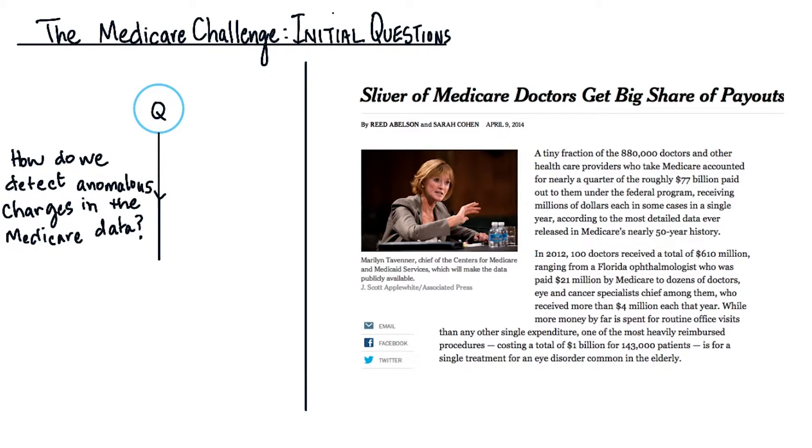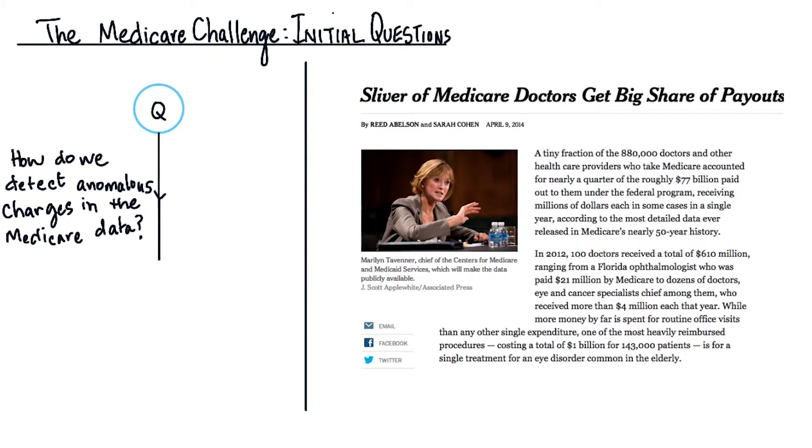So now, we can ask the first question. How do we detect if there are anomalous charges in the Medicare data? That question immediately leads to the next question. How do we define anomalies in data?